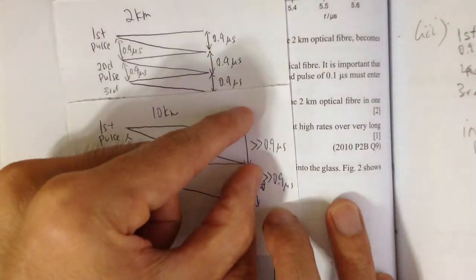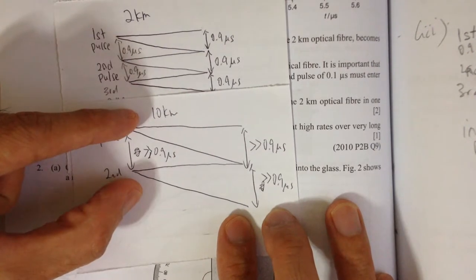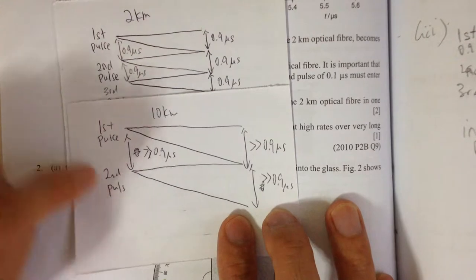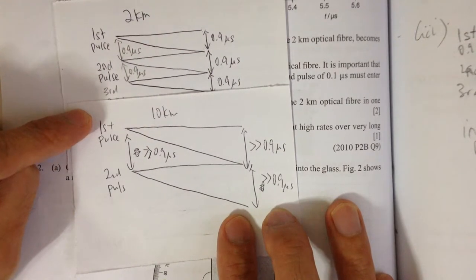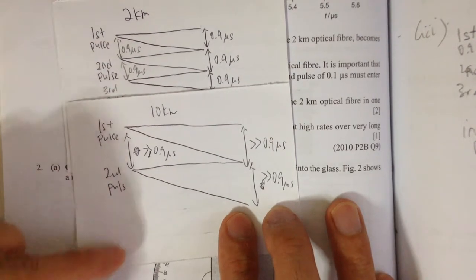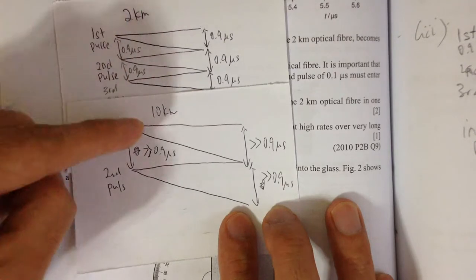So if the spread is higher, the second pulse can only enter at an even wider time after the first pulse. So that means in one second, you can only put a fewer number of pulses as compared to 2 km. For 10 km, you can only put a fewer number of pulses.